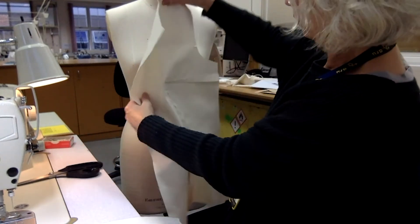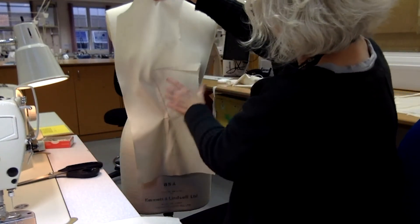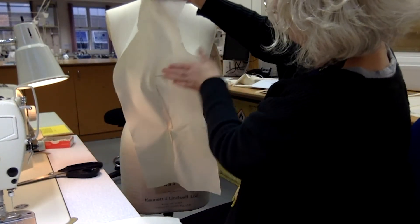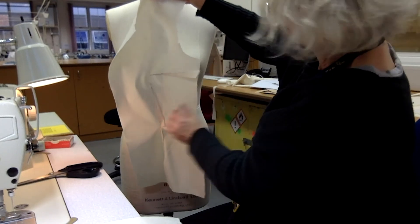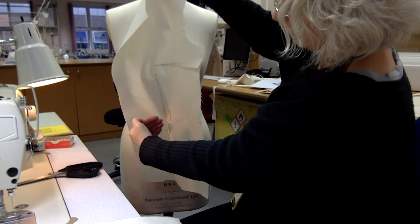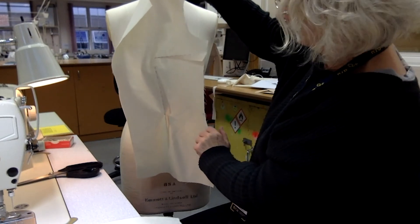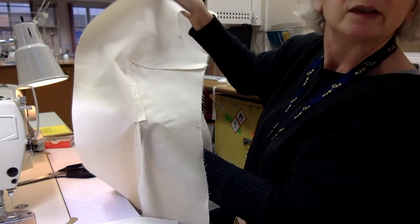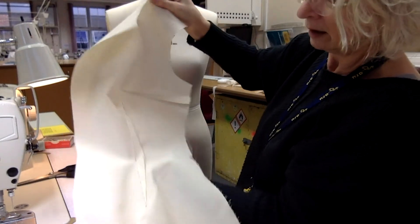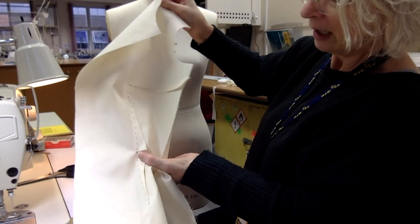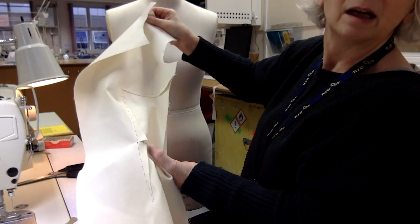You'll also, with that top breast dart, you need to press that so the dart lies downwards. And the body one, you need to press it so that it's facing towards the side seam here. You also need to just snip at that center point of this dart and that will help for that to lie as flat as you can.